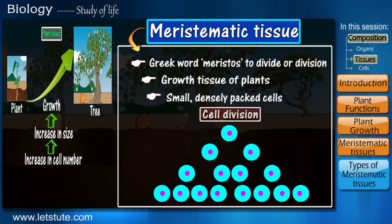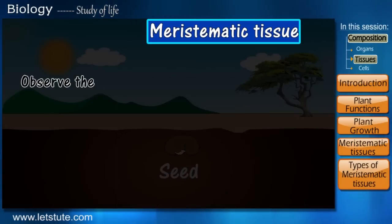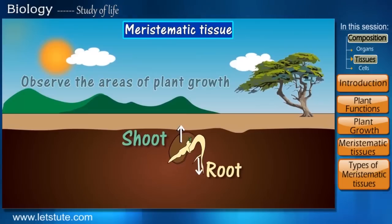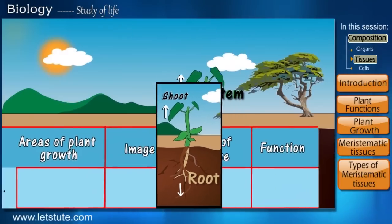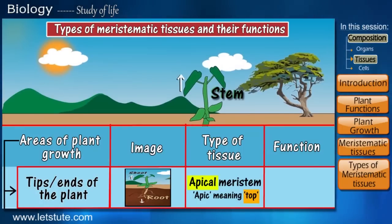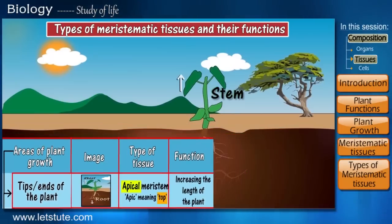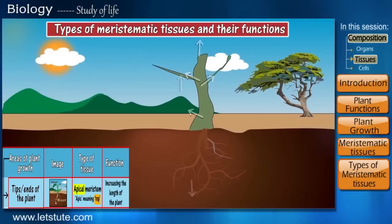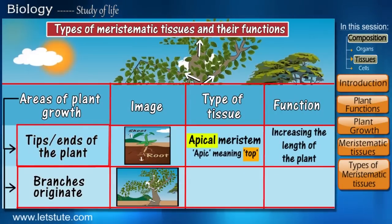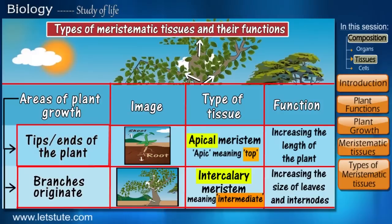Now that we know the tissue responsible for plant growth, let's go a step forward and observe the areas where growth occurs by watching the seed. A seed grows or germinates by giving out a root and a shoot, which keep on growing. The meristematic tissue at the tip of the stem and the root is called the apical meristem, where apical comes from the Latin word meaning the top, and helps in increasing the length of the plant. The plant, along with an increase in height, also starts giving off branches and leaves. This type of meristematic tissue occurring between the apex and the leaf is called the intercalary meristem, and it helps in increasing the size of the leaves and the internodes.